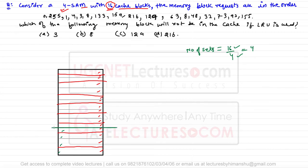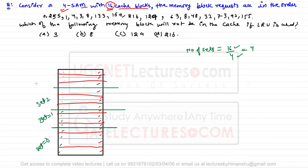The first set has lines 0, 1, 2, 3. Similarly, the second, third, and fourth sets each have four lines numbered 0 through 3. So we have set number 0, set number 1, set number 2, and set number 3. The first memory request is for block 0.